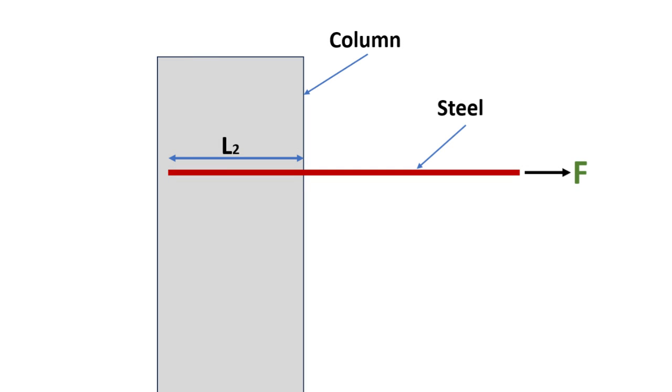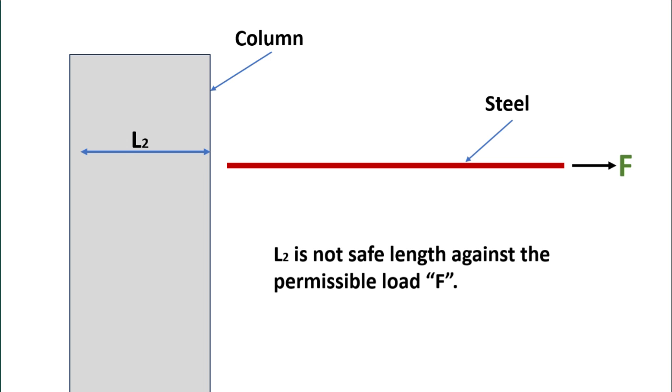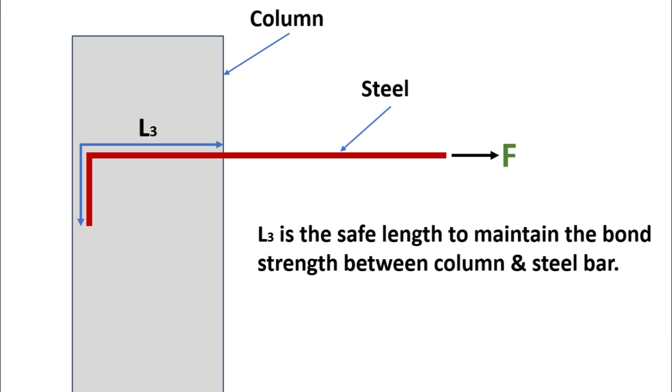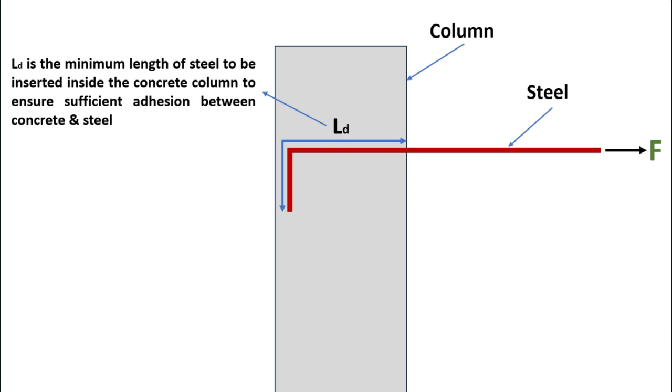Let's increase the length of the bar to L2, and assuming it still does not solve the issue, let's further extend it to L3. This ensures a safe bond strength between the column and the steel bar, preventing the bar from pulling out. The minimum length required to prevent the bar from coming out of the column after the application of force F is what we refer to as development length. It is also denoted as LD.